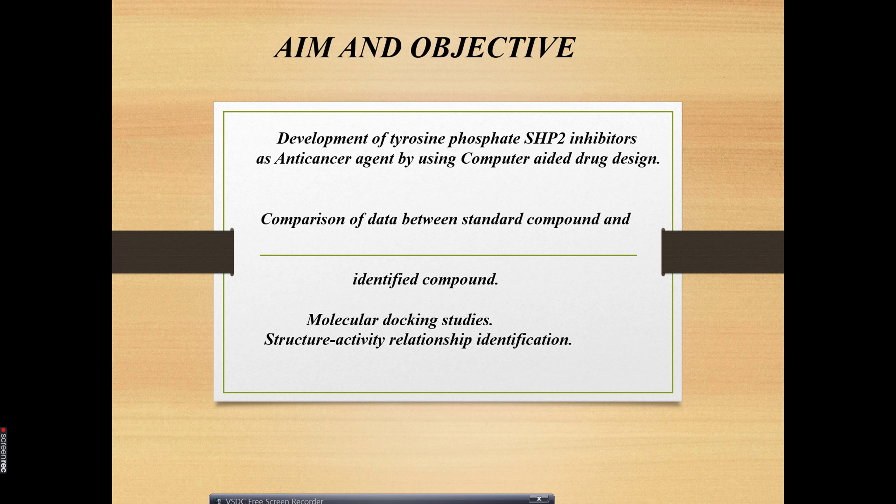First you have to take your own data and then compare the drug you are making with what is available in the market. The basic need is comparison of data between the standard compound and your identified compound. Then you proceed to molecular docking studies and further go into structure-activity relationship identification. Then you summarize your plan of work.